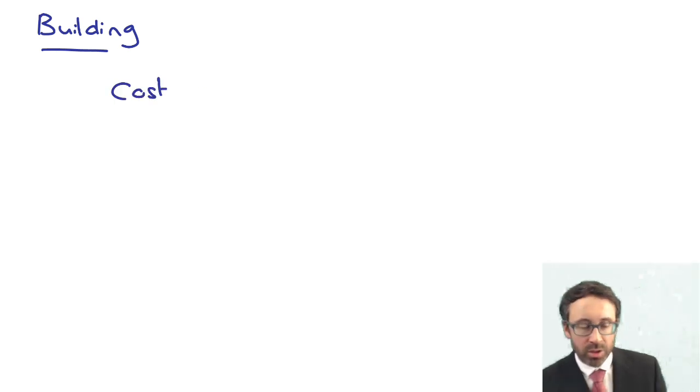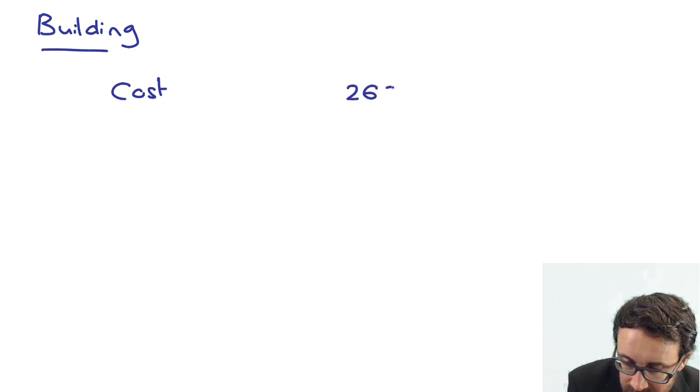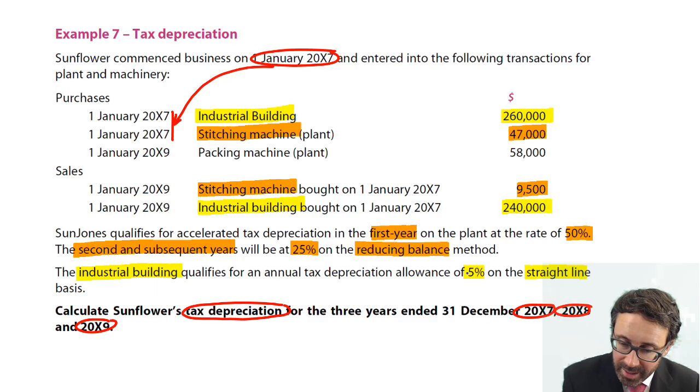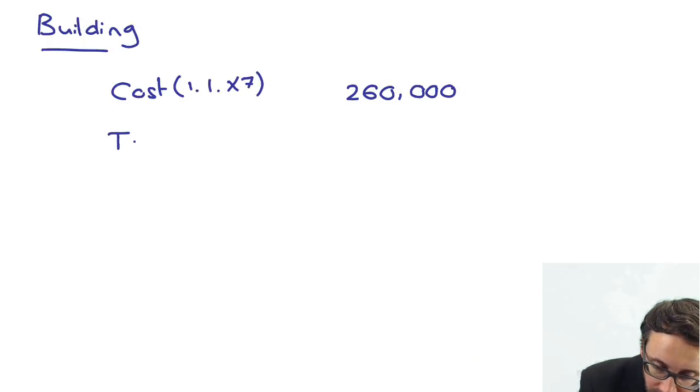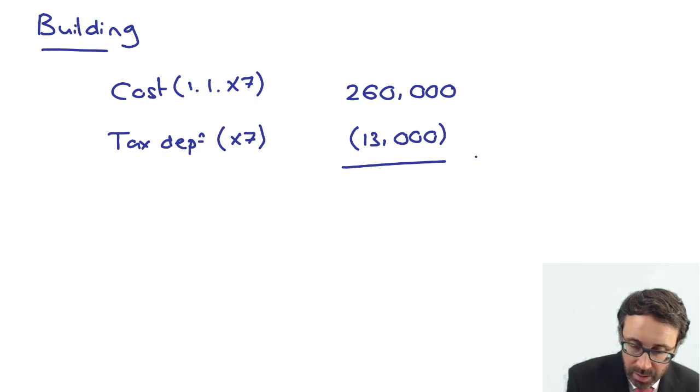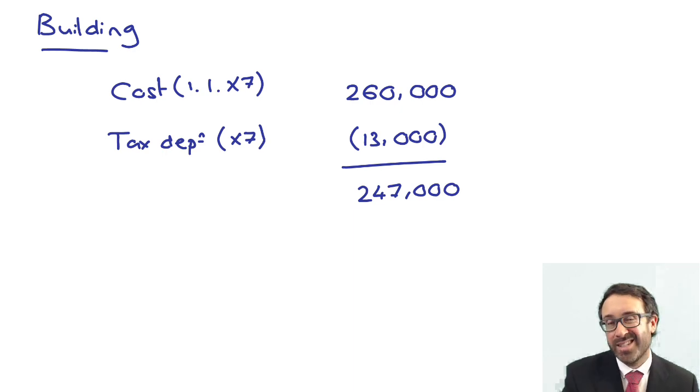So what I would do is I would look at each item separately. So let's look at the building. So the cost that we have was that $260,000, and that happened on the 1st of the 1st, was it 20X7? She bought it for 260 and it gets 5% straight line. So our tax depreciation for X7 is there at $13,000.